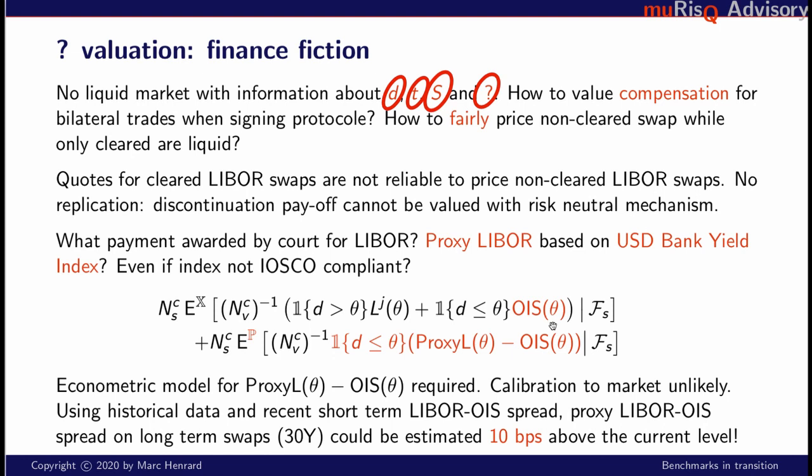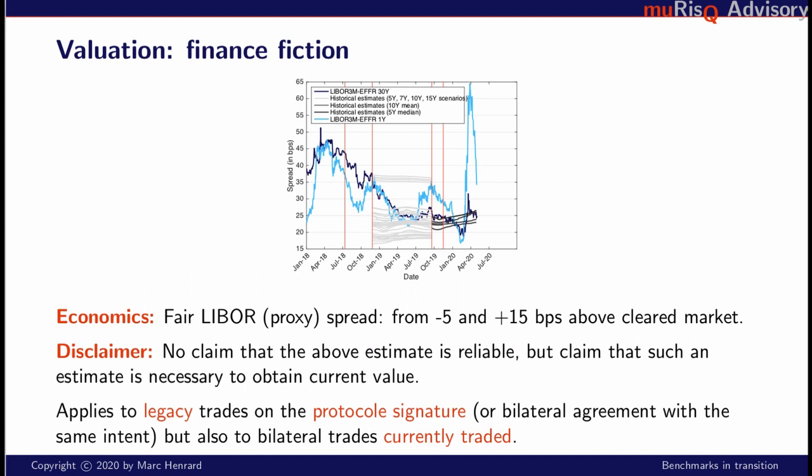What we saw on the graph is that currently, with the crisis, this econometrical spread is well above the level of the cleared market, which is based on the legal spread — the median of the last five years. To summarize from an economic perspective: to have a fair LIBOR, we need a proxy spread between the proxy and OIS. From the data, we see a spread that can be quite higher than the quoted market spread — anywhere between minus 5 to plus 50 basis points.